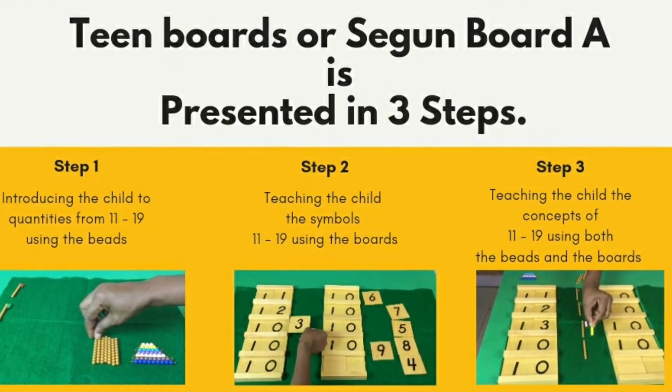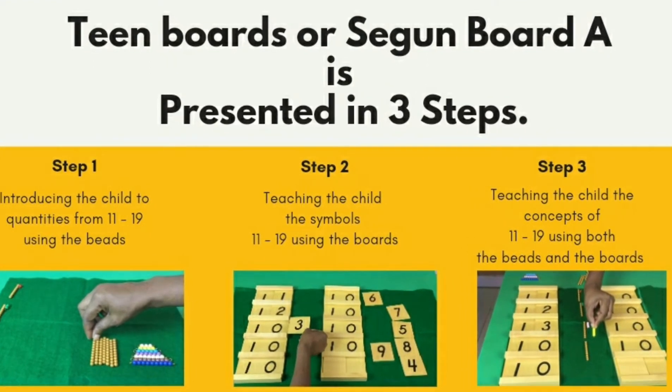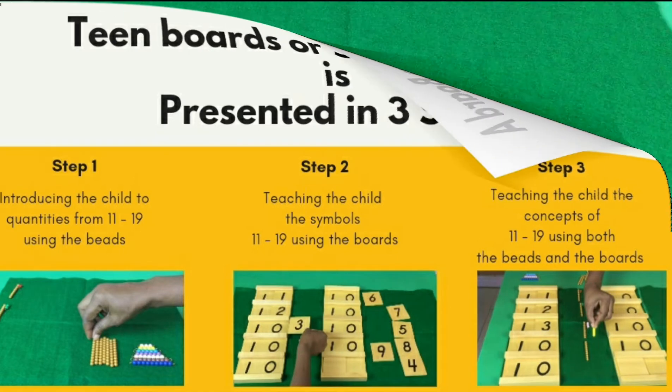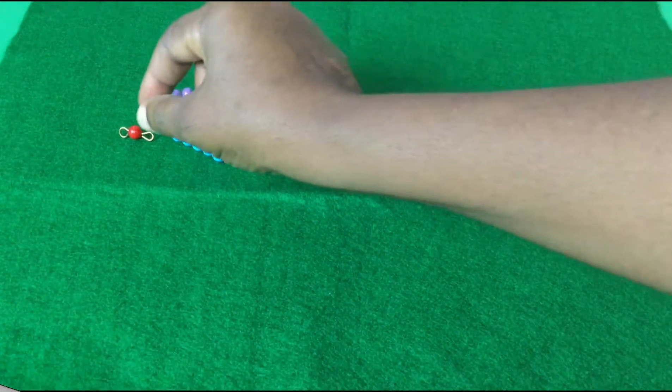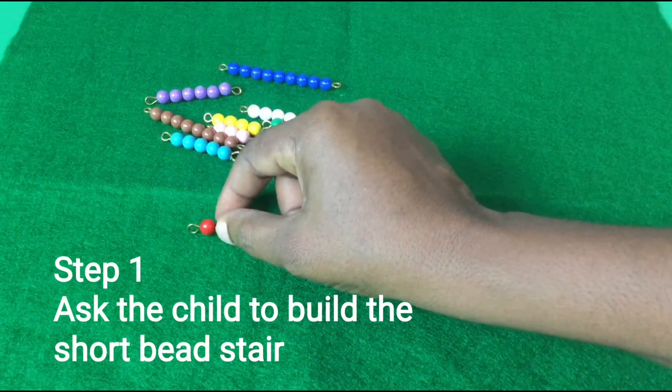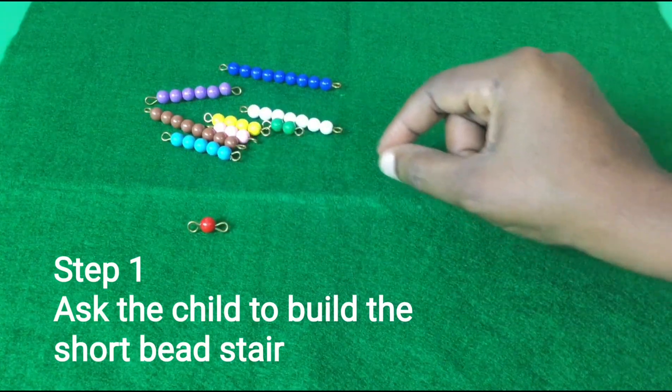Teen boards, or Segno Board A, is presented in three steps. Step one: introducing the child to quantities from 11 to 19 using the beads. Step two: teaching the child the symbols 11 to 19 using the boards. Step three: teaching the child the concepts of 11 to 19 using both the beads and the boards.